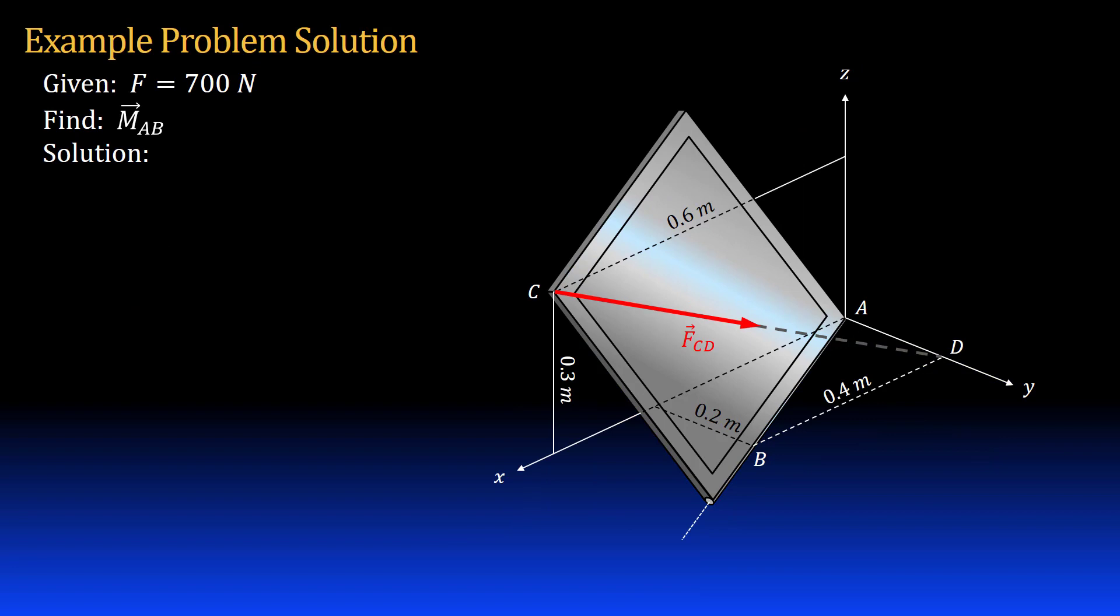Like most engineering problems there is more than one way to correctly solve this problem. The way I will do it is to find the moment about point A using the cross product, then project the moment about the axis of the hinge AB using the dot product.